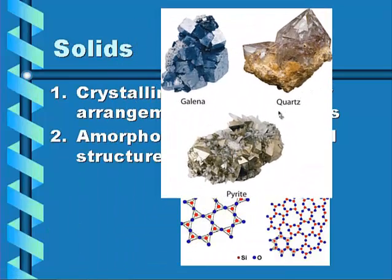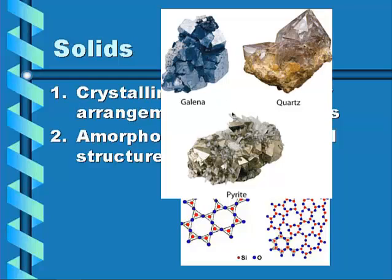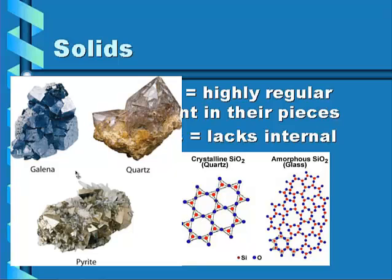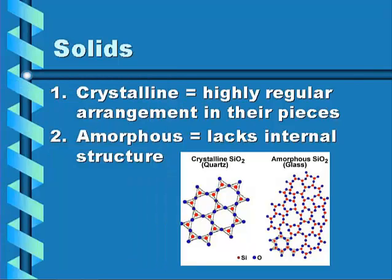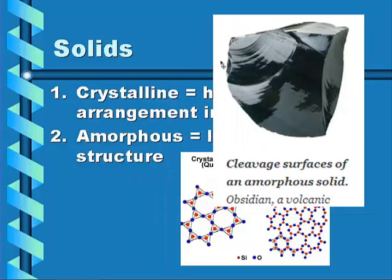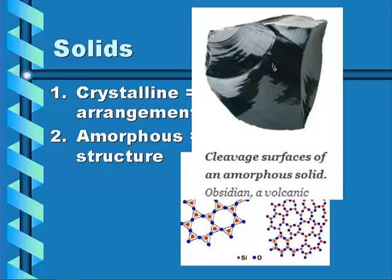Crystalline solids, whenever they are cleaved or struck, have a regular repeating unit. This galena looks like it's in cubes, pyrite is in cubes, and the quartz is in a pointy shape. Some amorphous solids would be like obsidian, which is volcanic glass.